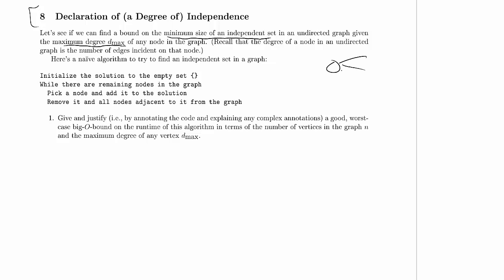The degree of a node counts the number of edges incident on the node. This one has degree four because it has four edges incident on the node.